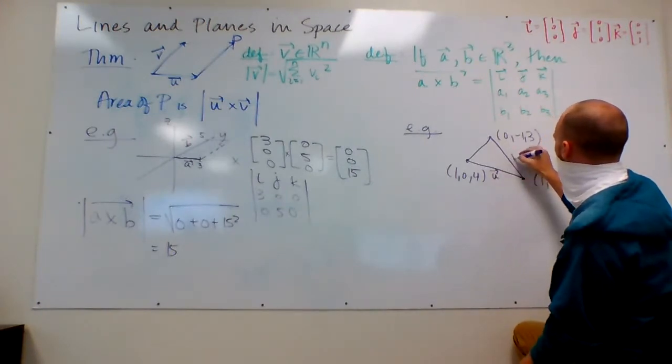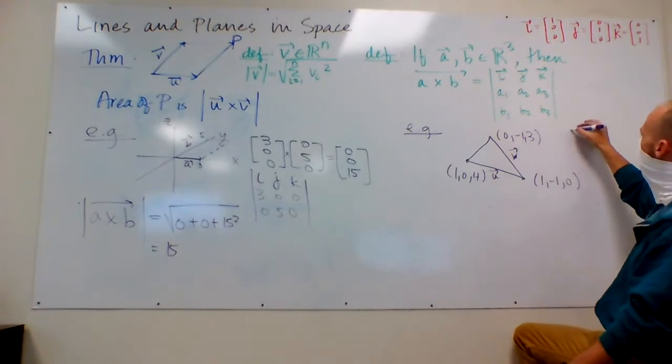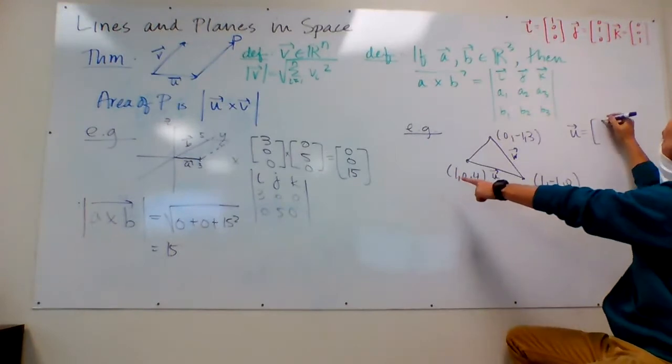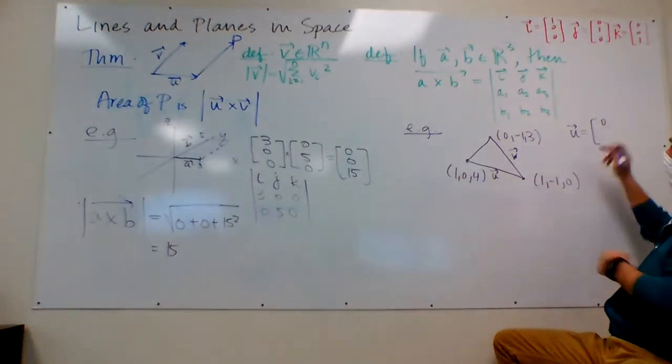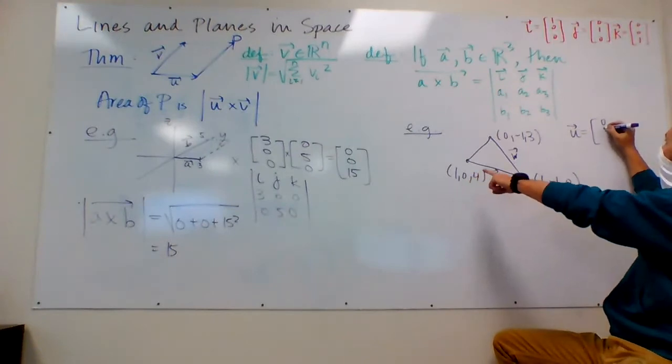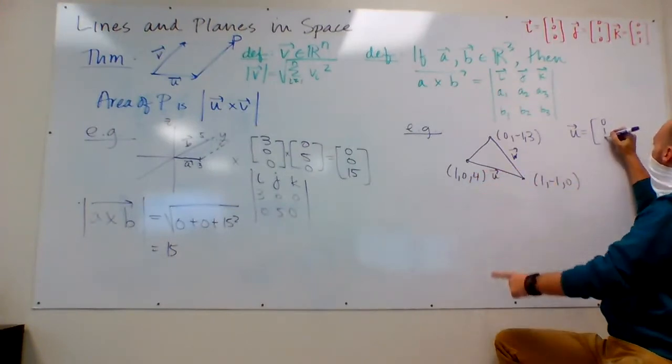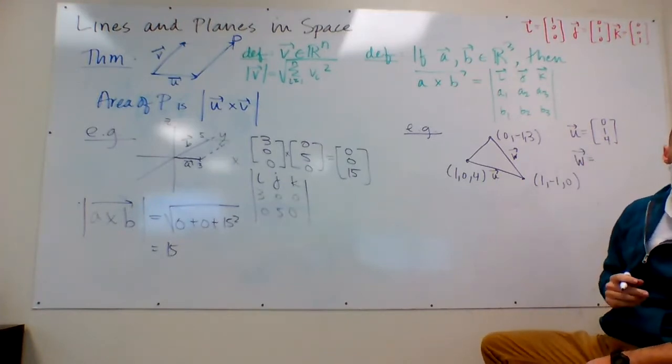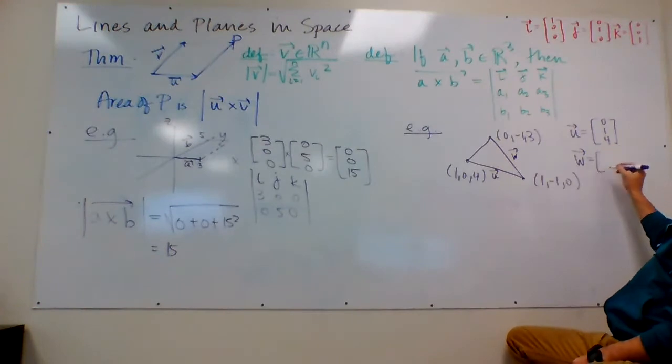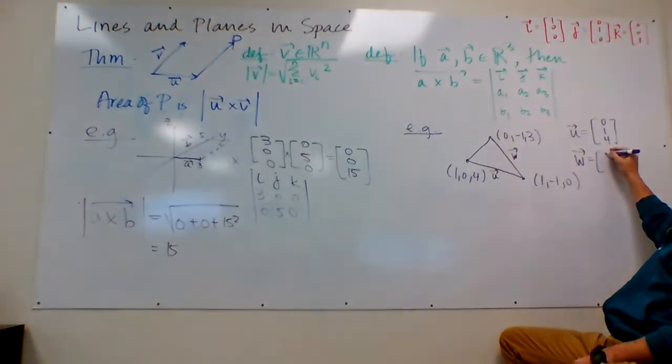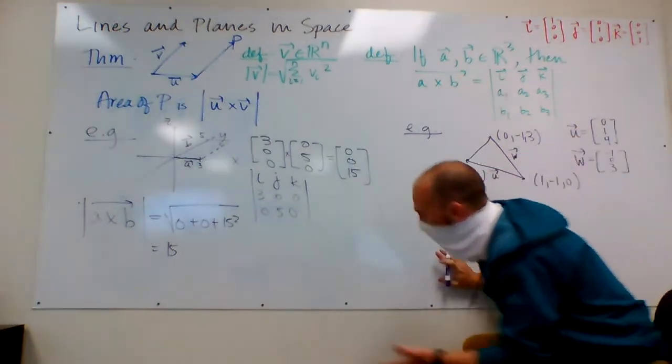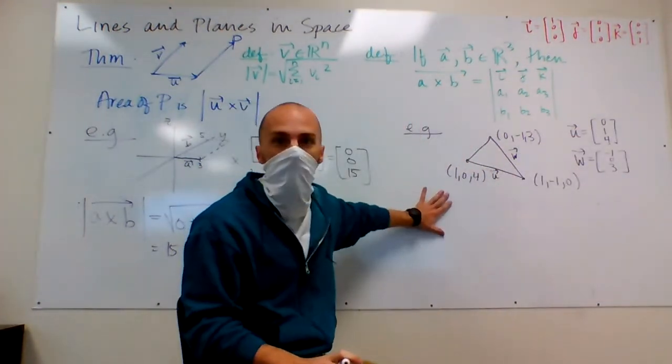So, I'll call this one U, and I'll call this one W. I've got U equaling, to go from one to one, I did not change X, so it would be zero change in X. To go from negative one to zero, I increased by one in the Y direction, and to go from zero to four, I increased by four. And then W is going to be, how do I get from one to zero? I lost one, negative one to negative one, no change, zero to three, increased by three. So, I'm going to take U crossed with W, I'm going to find the length of that, and then I'll divide it by two.